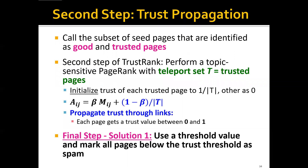Once we have picked the seed set and identified the good trusted pages, the second step is to perform a topic-specific PageRank with the teleport set T as the trusted pages. We initialize the trust of each trusted page to 1 over the size of T. For any other page that is not trusted, we set the trust to 0. This is our initialization, and then we run the PageRank algorithm.